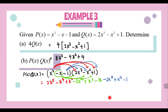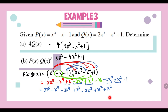Next, we rearrange from the highest power. The highest power is 2x⁵, followed by -x⁴ and -2x⁴, then the power-3 terms: +x³ and -2x³. For x²: +x² and +x². For x, we only have -x, and the constant term is -1.